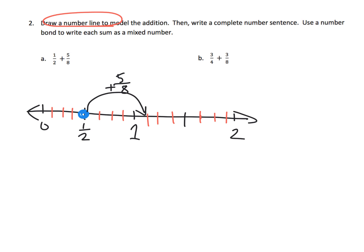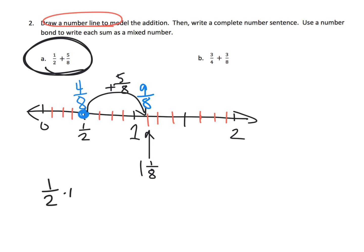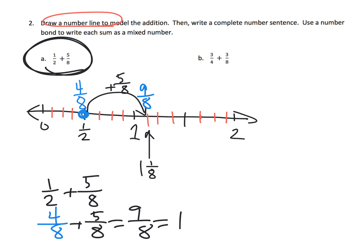Where do we end up? There are a couple of ways we can think about it. Right here is one whole plus one eighth — here's one whole plus we have an extra little piece. Another way to think of it: one half equals four eighths, and four eighths plus five eighths gives us nine eighths. In a more standard algorithm way, parents and teachers, one half plus five eighths is the same as four eighths plus five eighths, which equals nine eighths, which equals one and one eighth. That's our complete number sentence: four eighths plus five eighths equals nine eighths, which is one and one eighth.